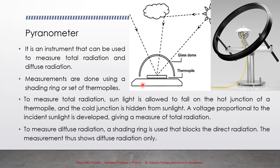To measure diffuse radiation, a shading ring is used that blocks the direct radiation. The measurement thus shows diffuse radiation only.